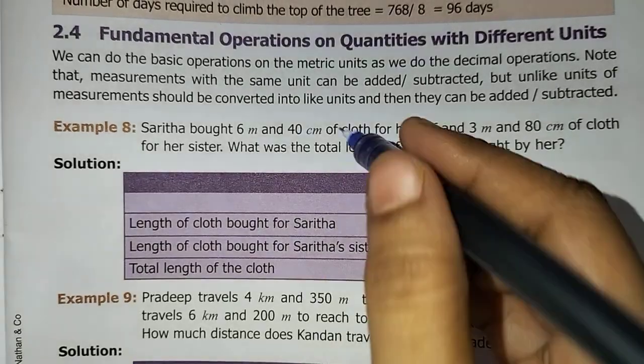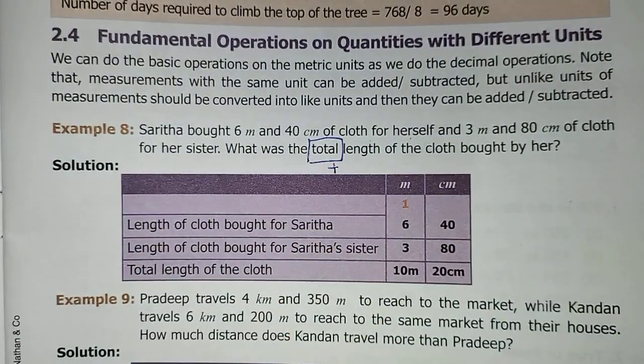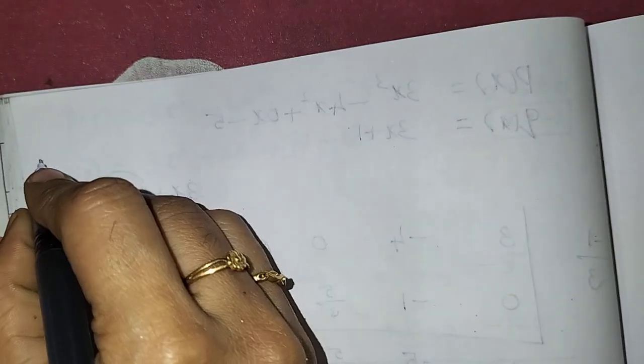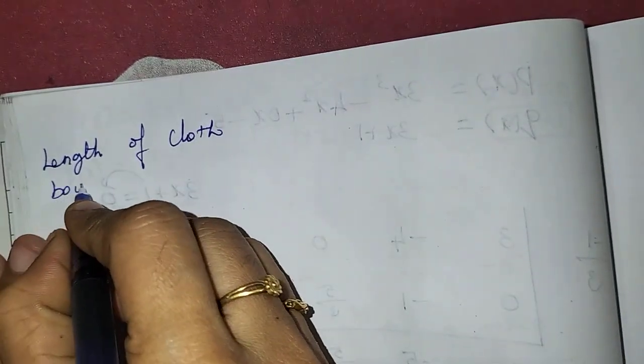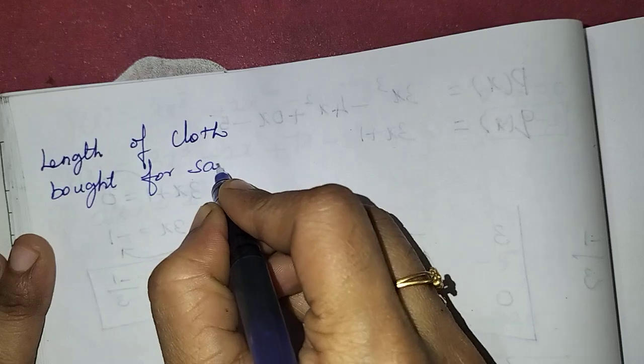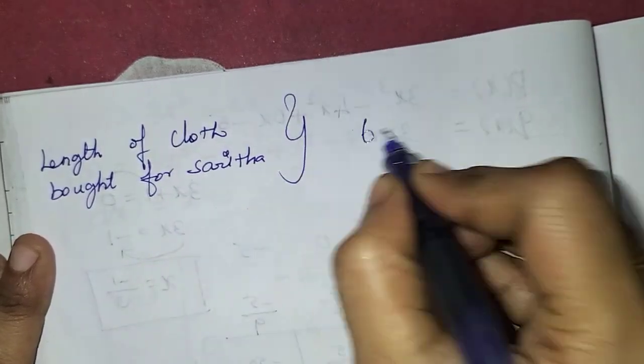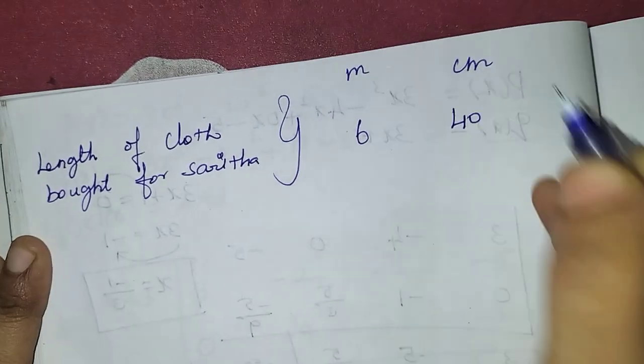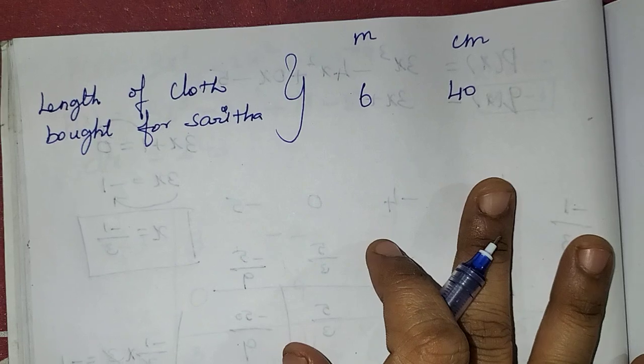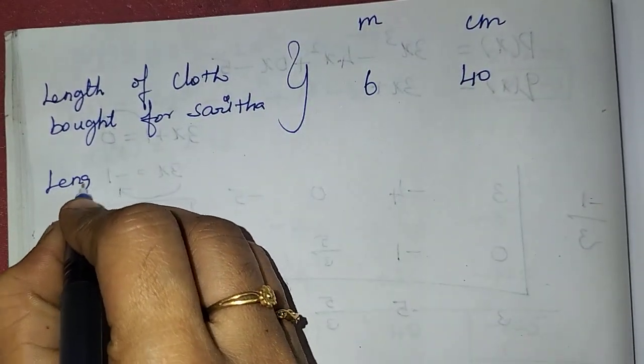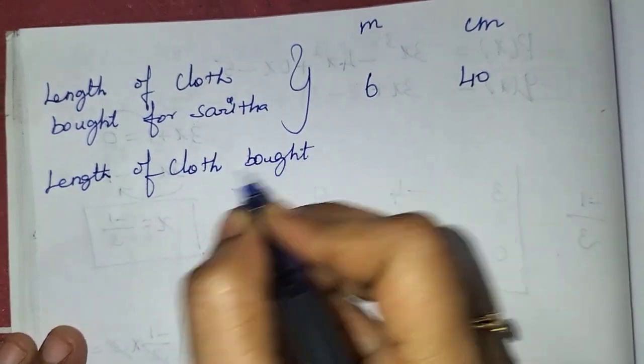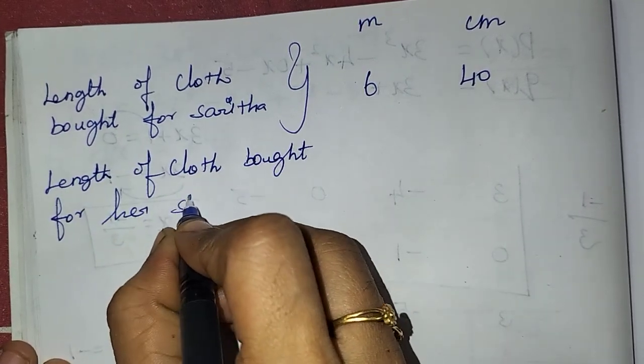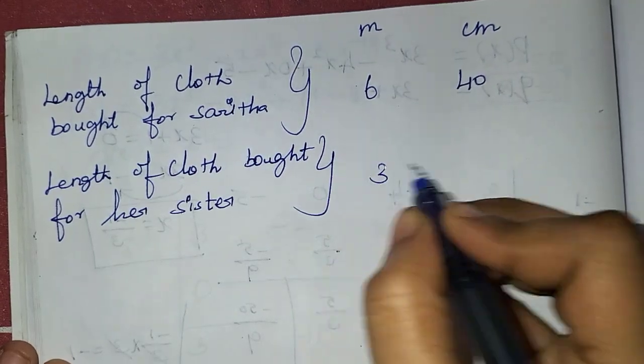Total - that's what we need to find. What do we do? We add. So very simple. Length of cloth bought for Sarita: 6 meters, 40 centimeters. Length of cloth bought for her sister: 3 meters, 80 centimeters.